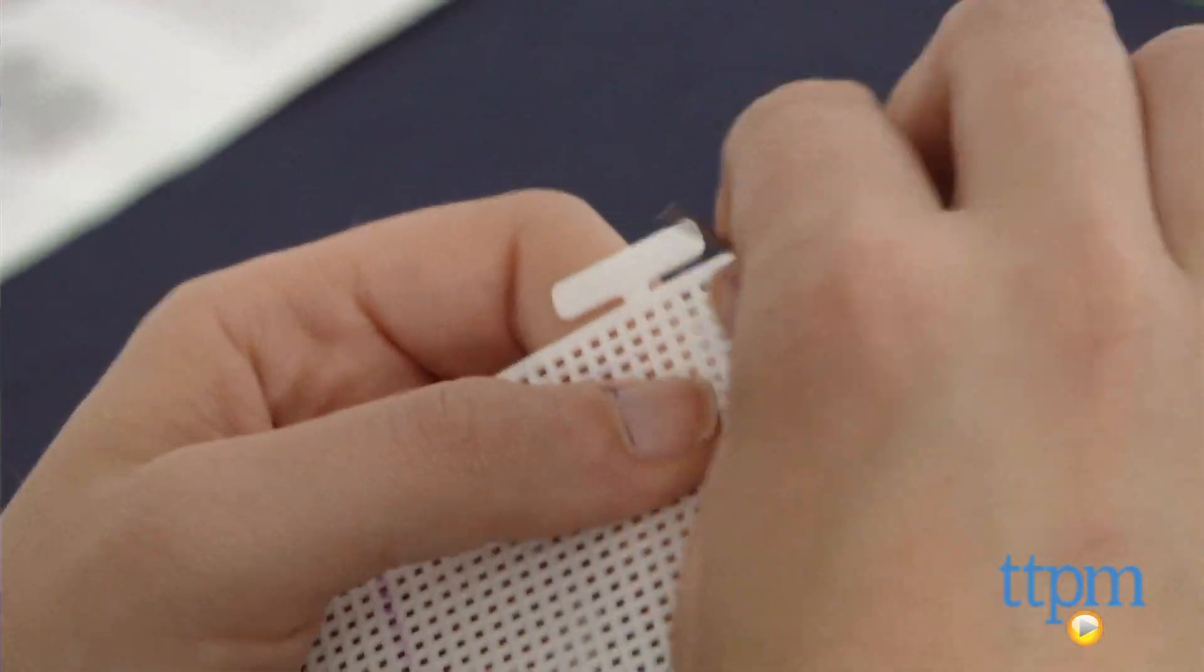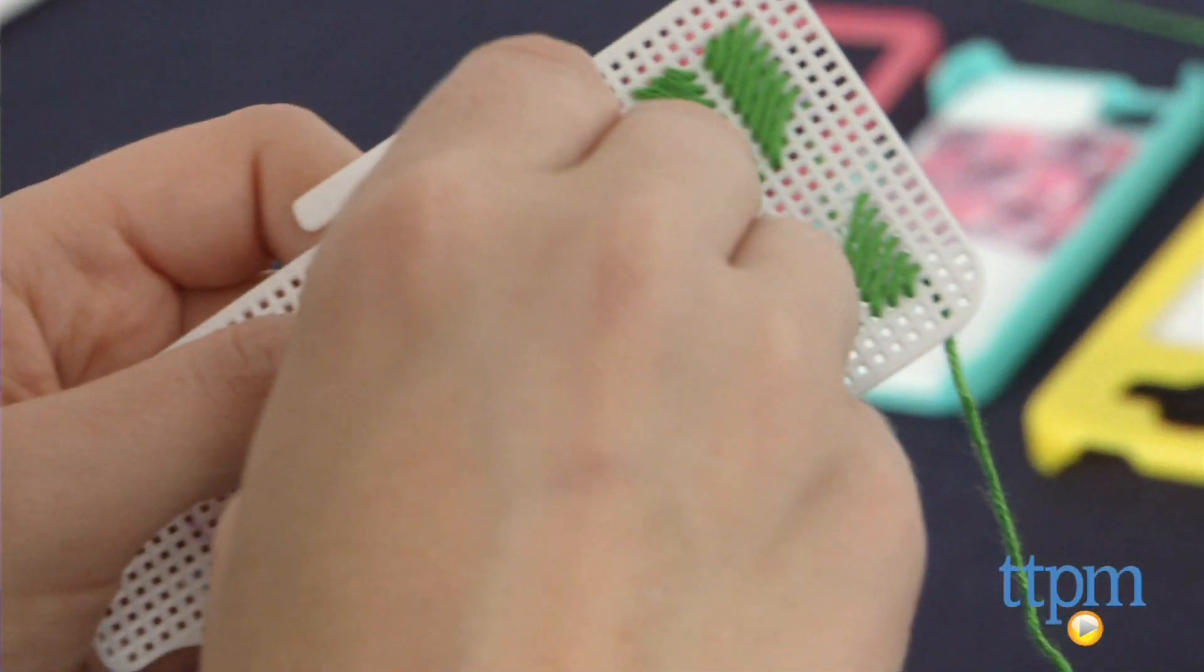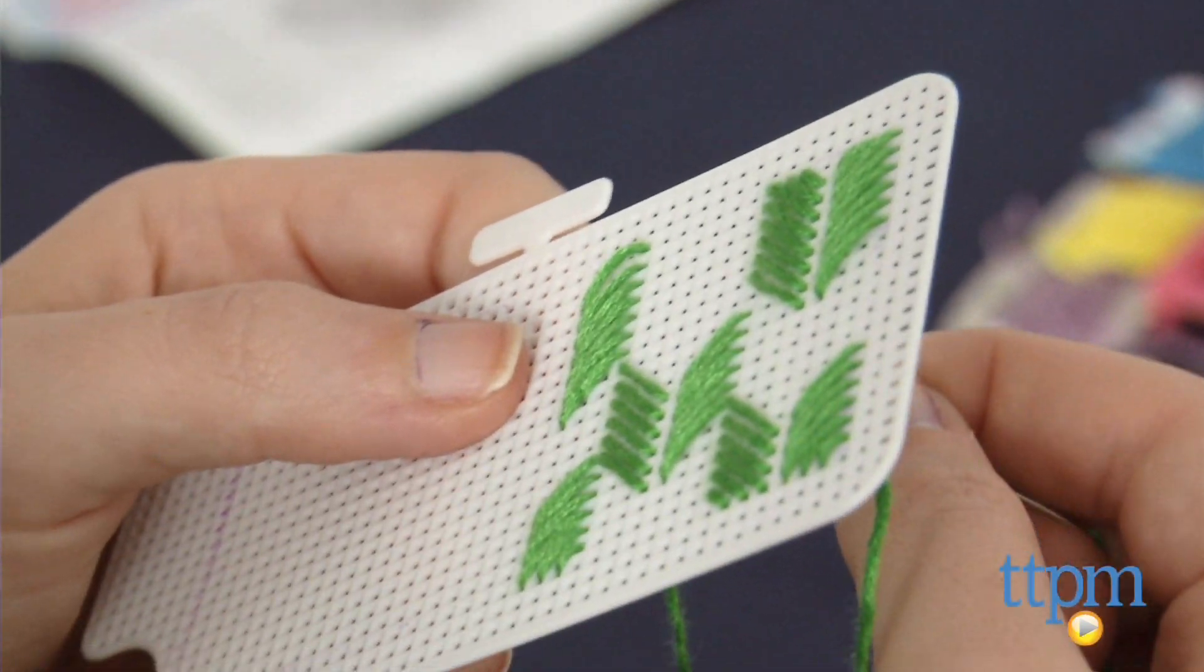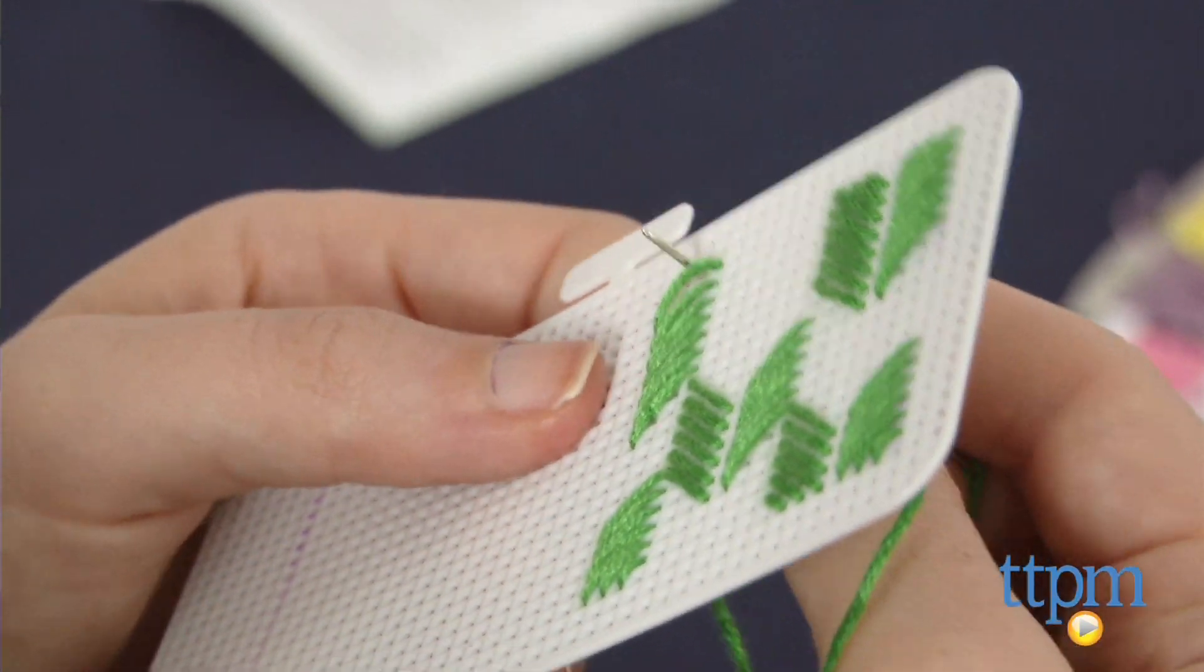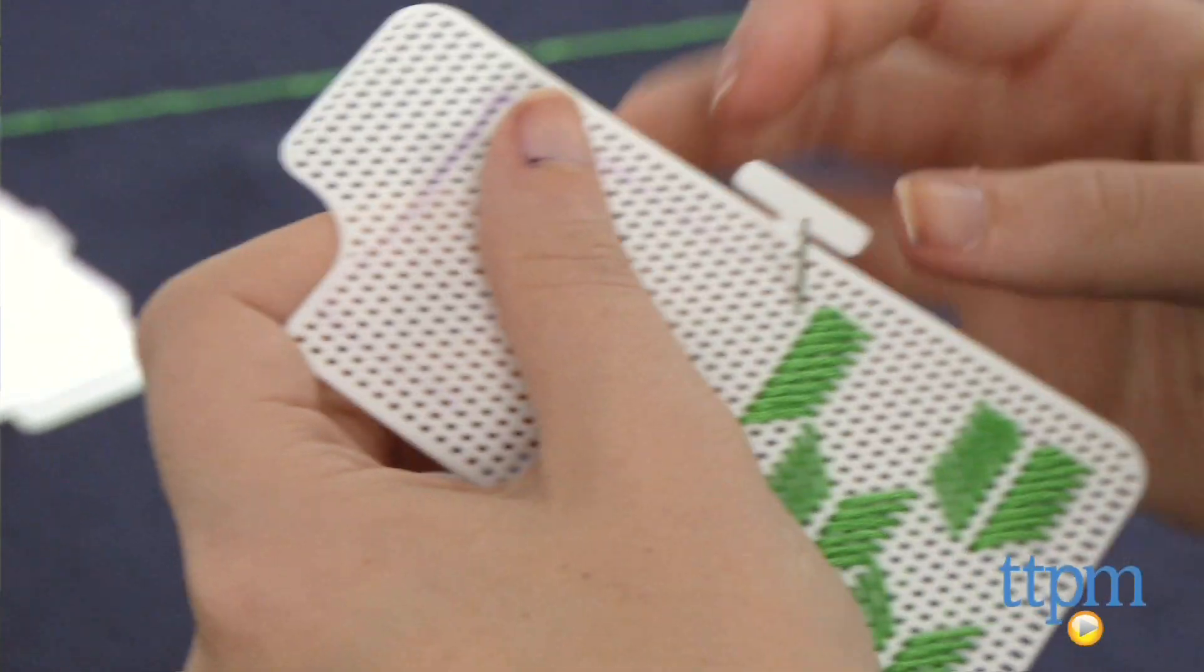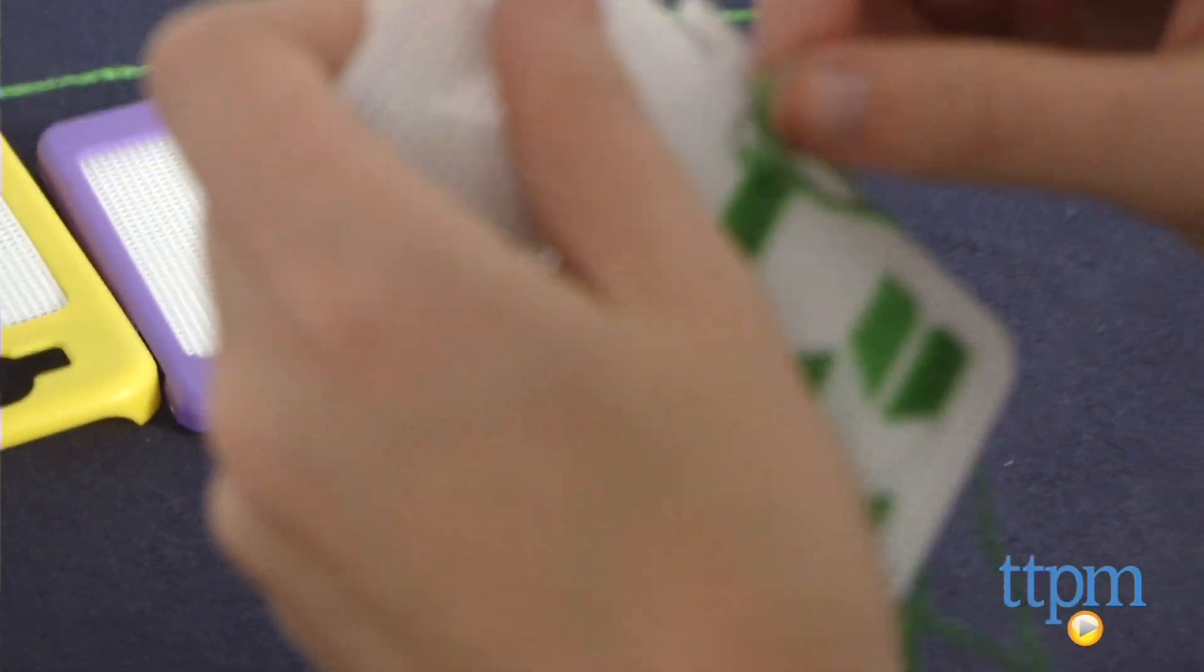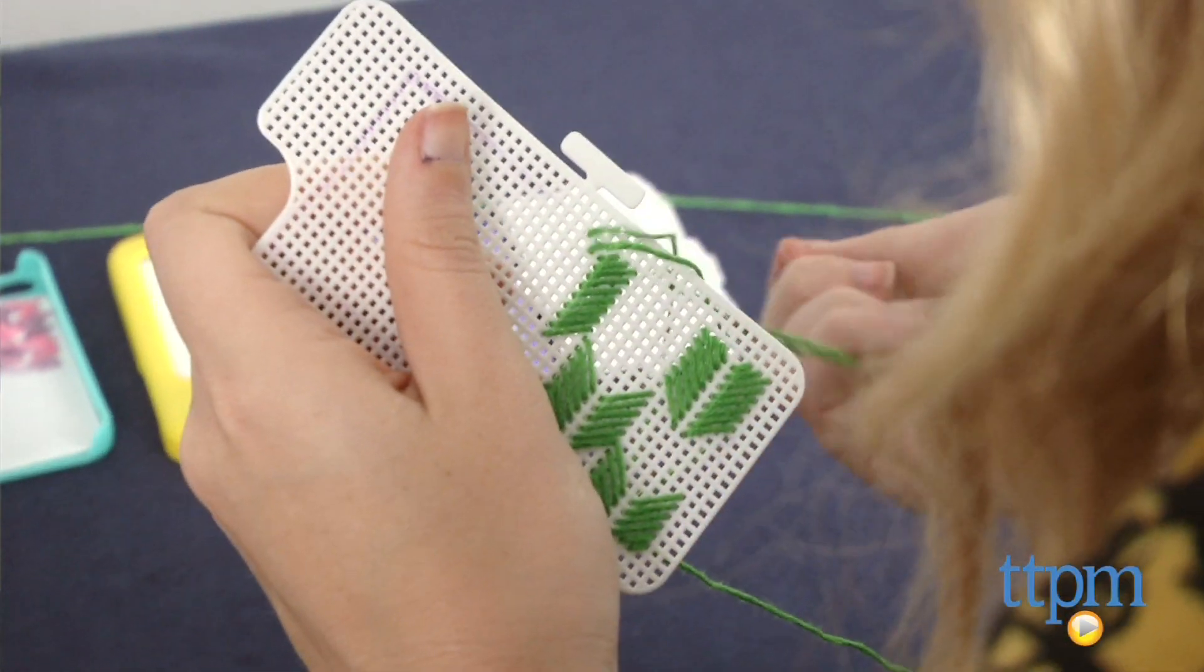Simply follow the pattern guide for a how-to on which stitch goes where. It's fairly straightforward and kind of becomes second nature after you complete the first row or two. You'll mainly be working with three types of stitches though: the straight stitch, the diagonal stitch, and the cross stitch. If you need assistance on how to do each, the guide gives you a helpful explanation.